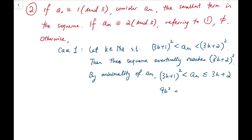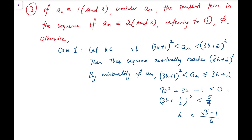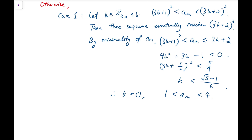Solving, we get 9k² + 3k − 1 < 0, which gives k < (√5 − 1)/6. Since k is a non-negative integer, k = 0, and so aₘ is between 1 and 4. But aₘ is congruent to 1 mod 3 and lies strictly between (3(0)+1)² = 1 and (3(0)+2)² = 4, meaning no valid integer exists. So there's no solution in this subcase.